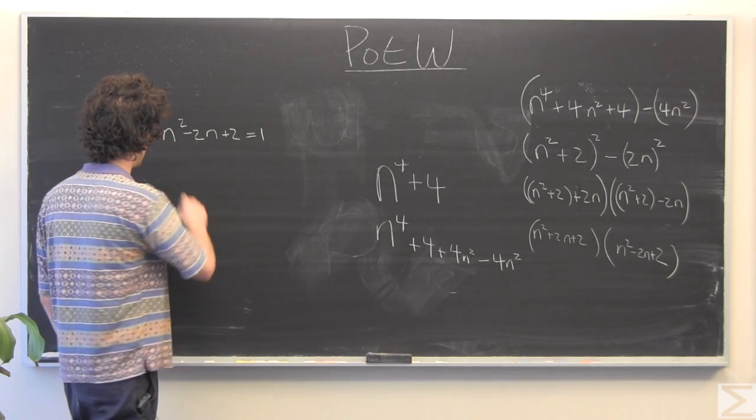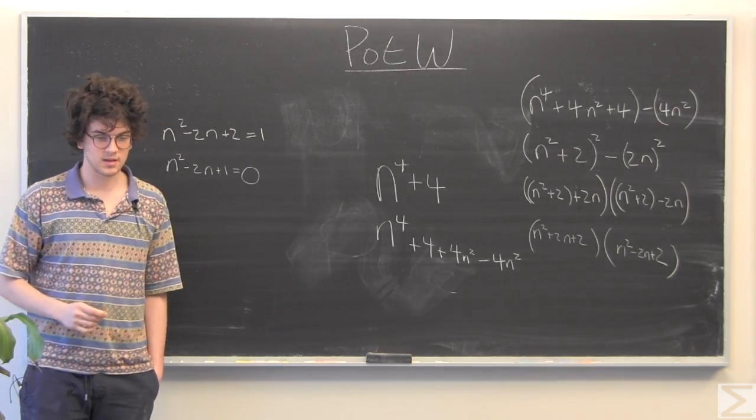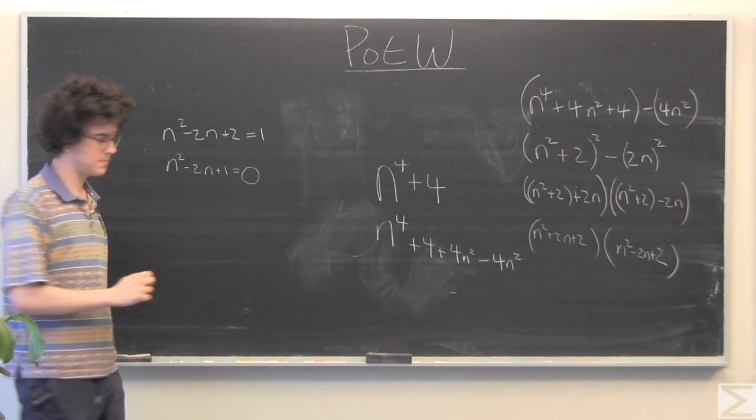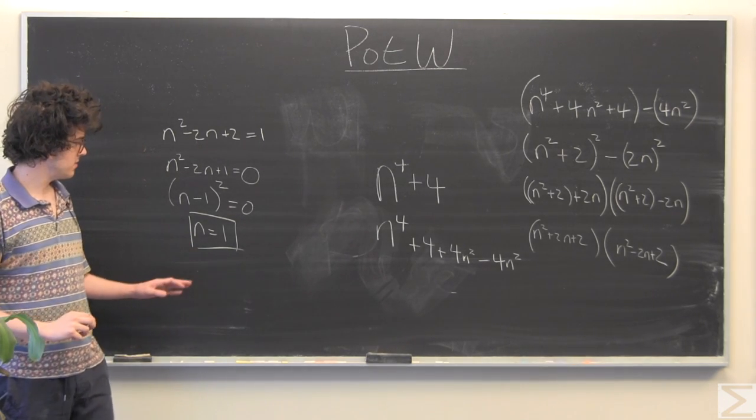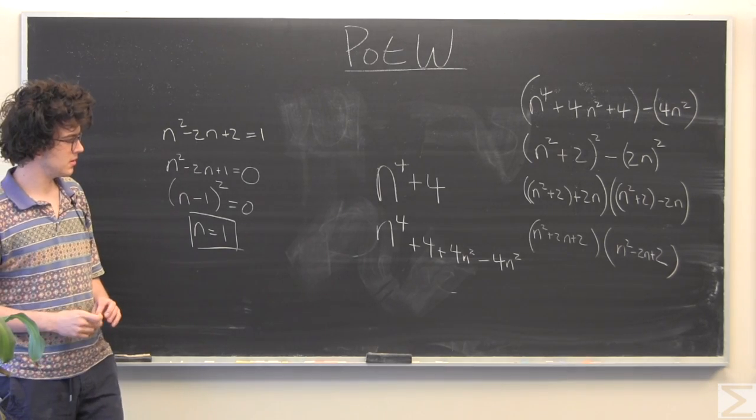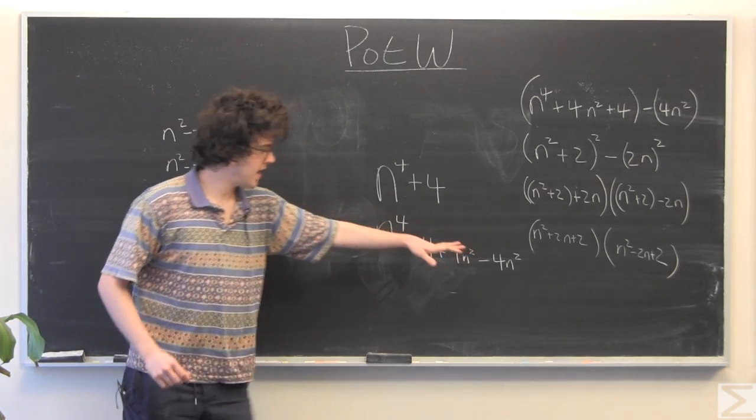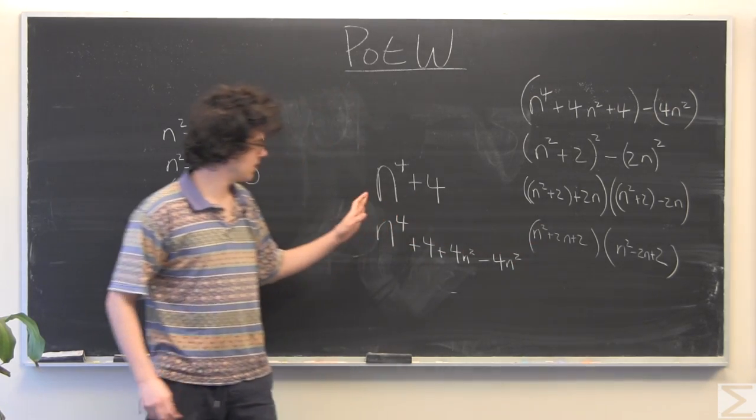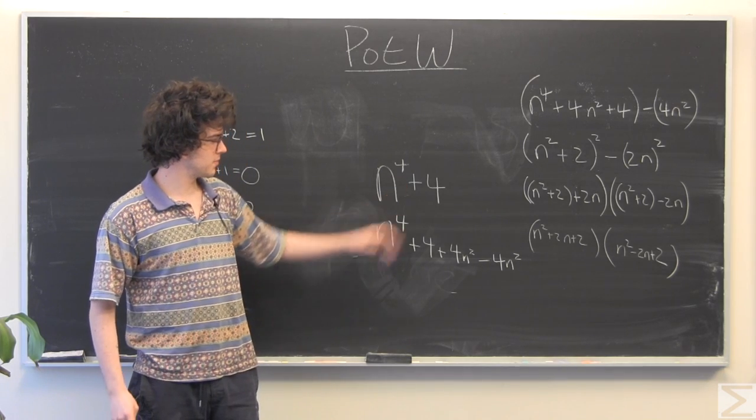So we have a simple equation. I'm going to subtract one from both sides, and this I can just factor out nicely. So we found our n value for when this equals one, meaning hopefully if we plug in n here, we're going to get, or if we plug in n equals one to this one, we'll get n to the fourth plus four.